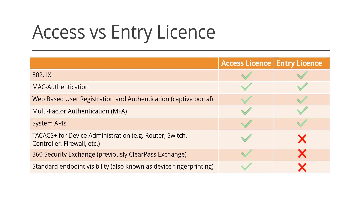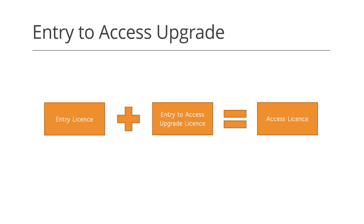Entry licenses are designed as a cut-down version that still includes basic NAC capabilities such as support for 802.1x, web-based and multi-factor authentication. Entry licenses are perfect for customers who have budget constraints but still want to take advantage of the powerful network access policy engine that ClearPass offers. You can always upgrade your entry licenses to Access by purchasing a special upgrade SKU and paying the price difference.